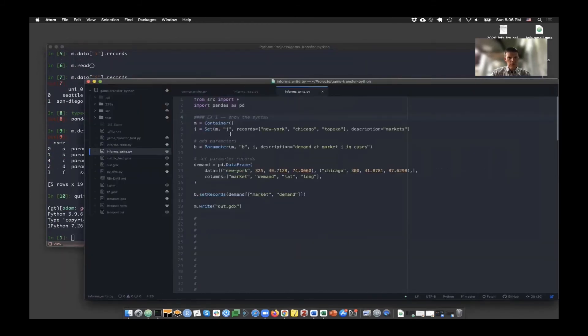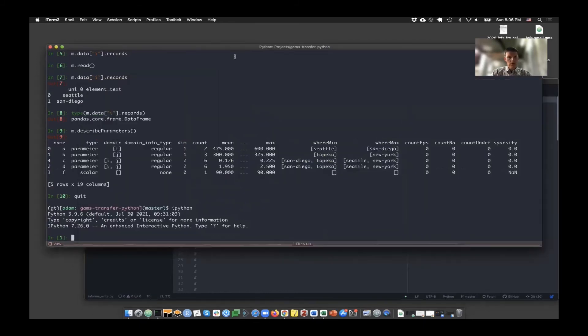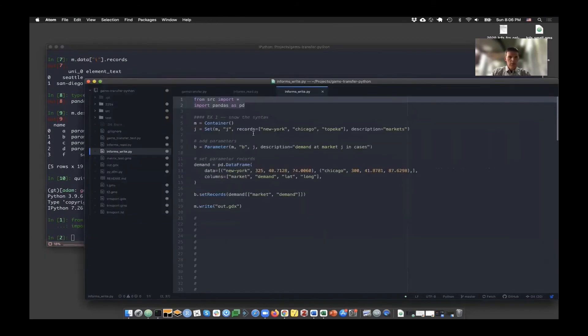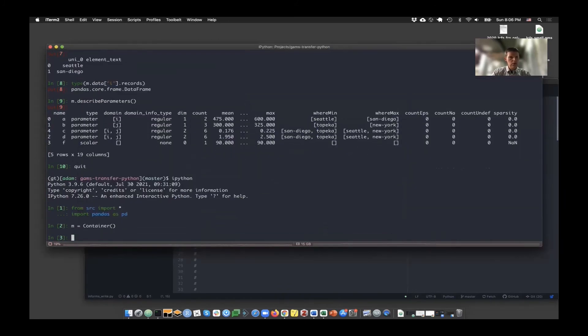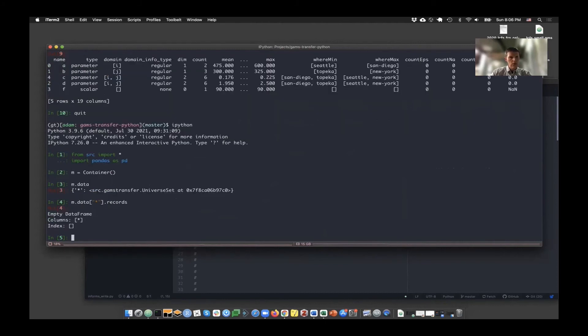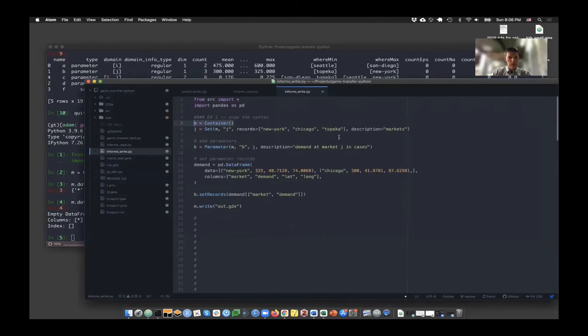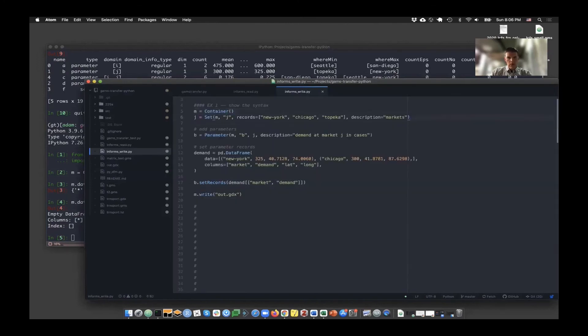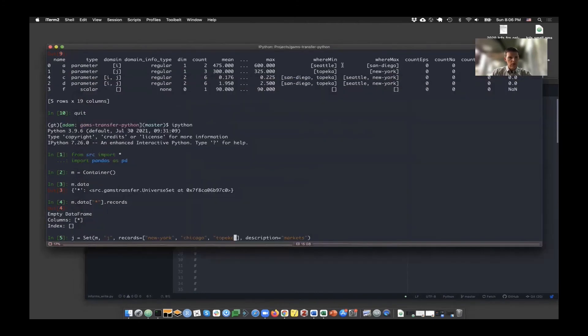That would be the read functionality of GAMS transfer. I just want to go ahead and show real fast how you can write data to a GDX file. So I'm going to go ahead and start with the same importing here. This time I'm going to create just an empty container. So m.data has a universe set in it, but that universe set has nothing in it. It's just an empty data frame, just a placeholder.